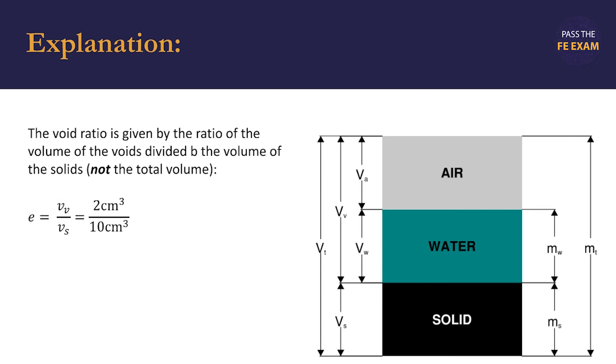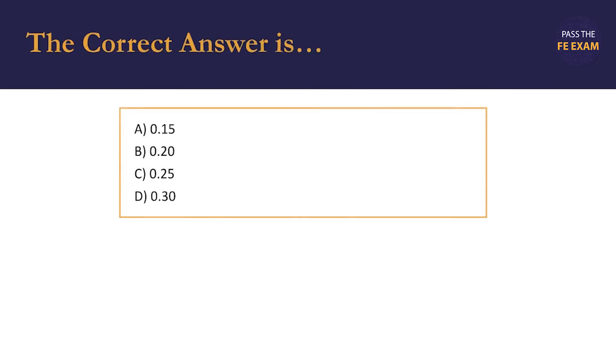So making sure that we use the right values, we substitute in 2 cubic centimeters for V sub V and 10 cubic centimeters for V sub S. This leaves us with a void ratio of 0.20. Looking back at our list of answer options, we see that B is 0.20 and is thus the correct answer.